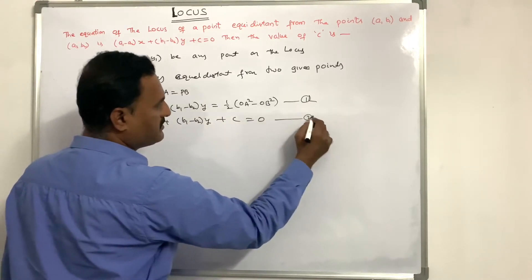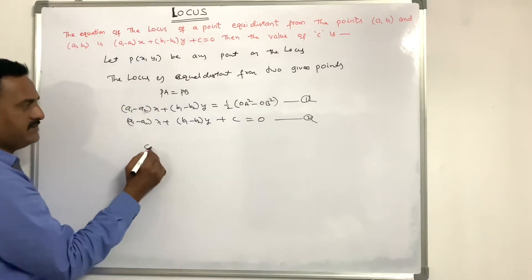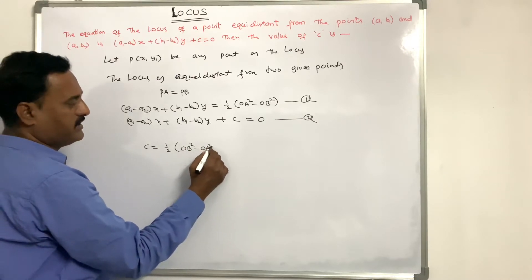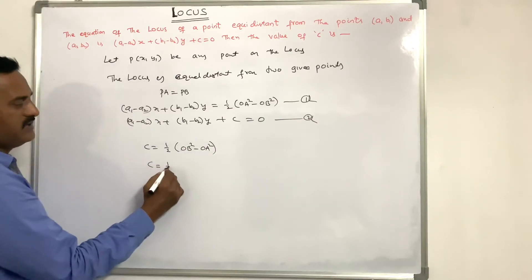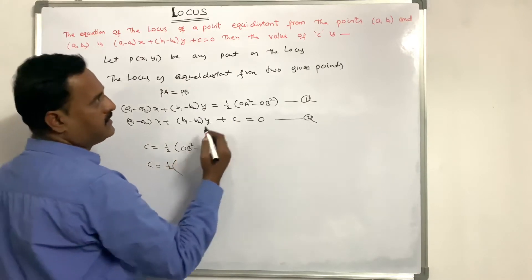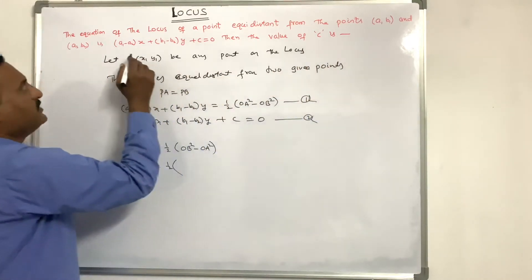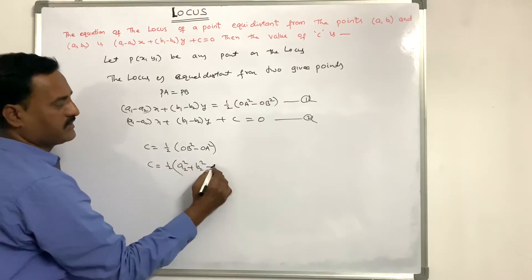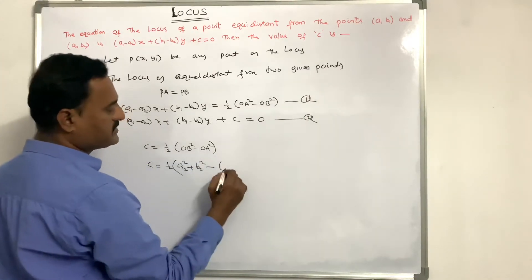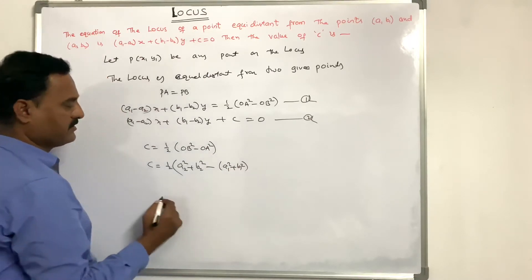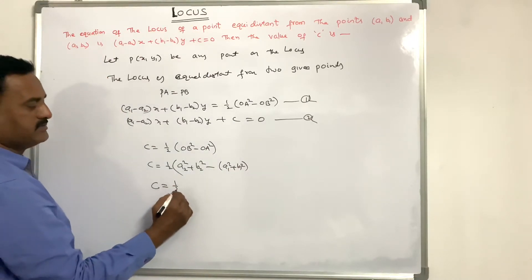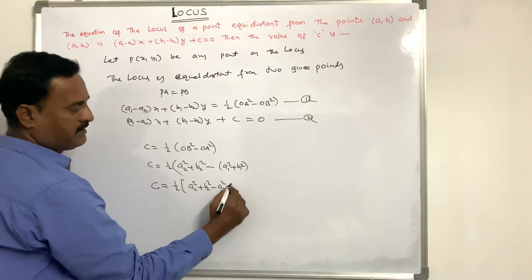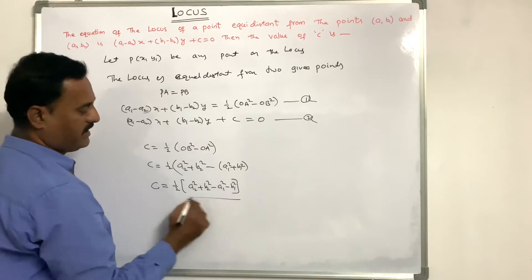From these two equations, the value of c is equal to half into the distance from origin to the second point (a2, b2) squared minus the distance from origin to the first point (a1, b1) squared. That is, c equals half into (a2 squared plus b2 squared minus a1 squared minus b1 squared).